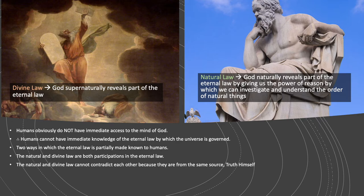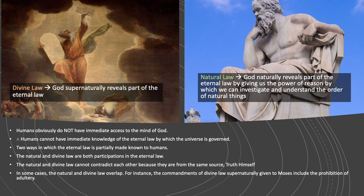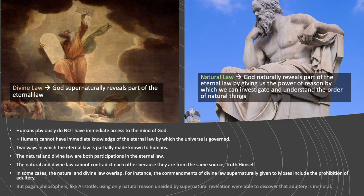In some cases, the natural and divine law overlap. For instance, the commandments of the divine law supernaturally given to Moses include the prohibition of adultery. But pagan philosophers like Aristotle, using only natural reason and without any miraculous revelation, were able to discover that adultery is immoral. So some things are known both through the natural law — through natural investigation of reason into the order of things — as well as by the divine law, through miraculous revelation and sacred scripture.